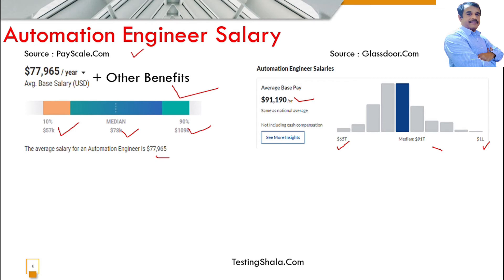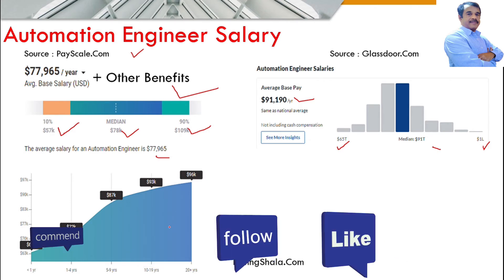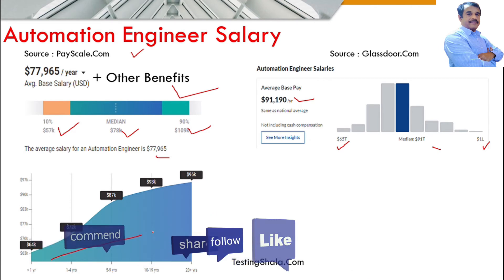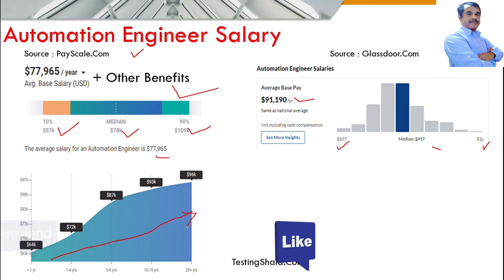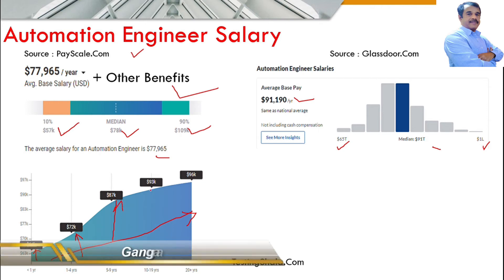Looking at salary progression over time: in the beginning you would earn around $64k; with one to four years of experience around $72k; five to nine years up to $87k; ten to nineteen years around $93k; and twenty or more years of experience around $96k.